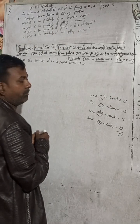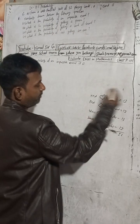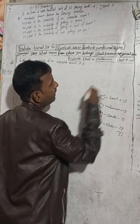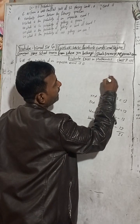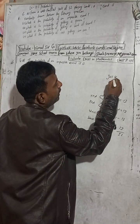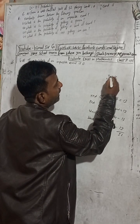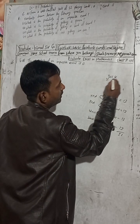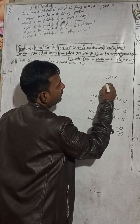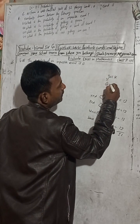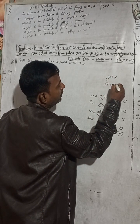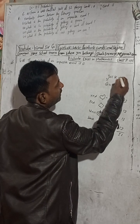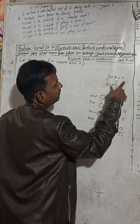Out of these 52 cards, there is one queen, one jack, one king, one ace — and also jokers.